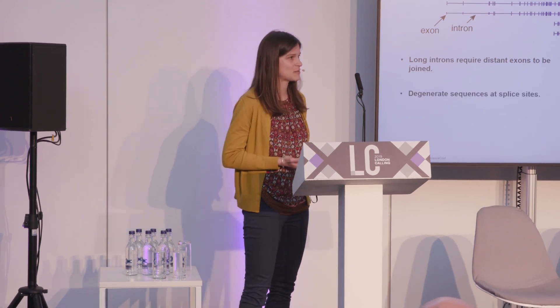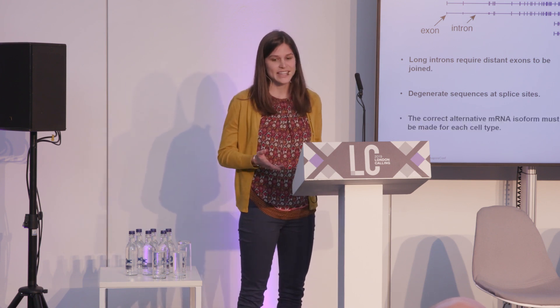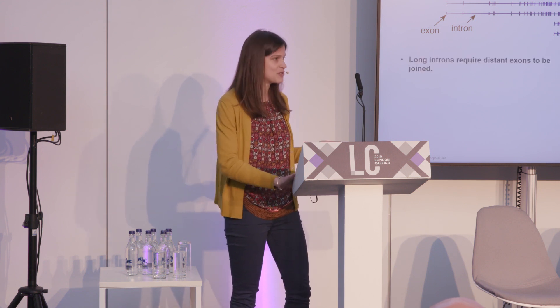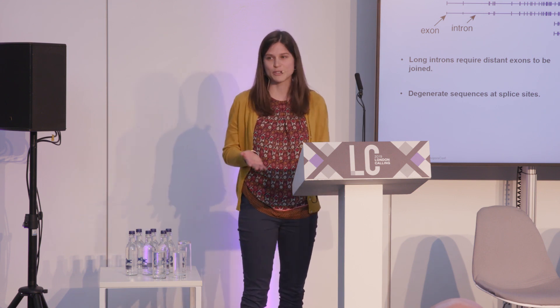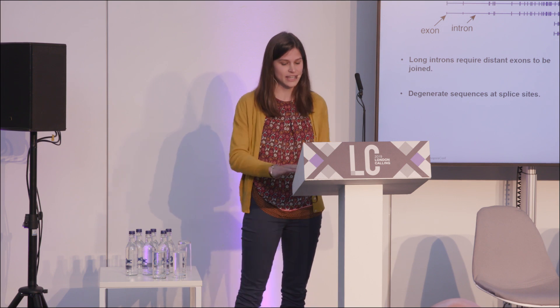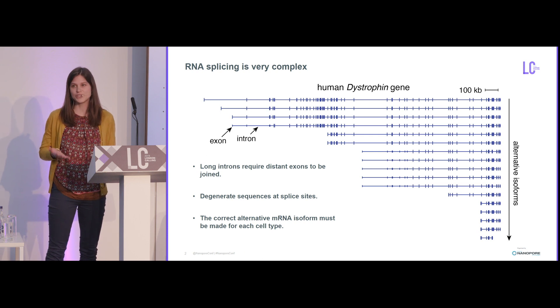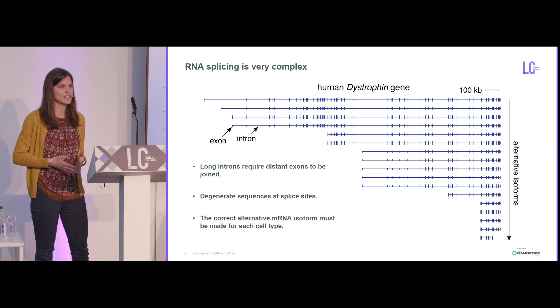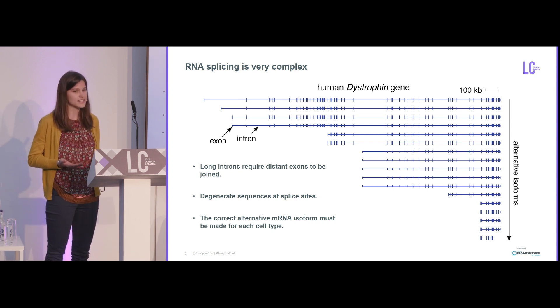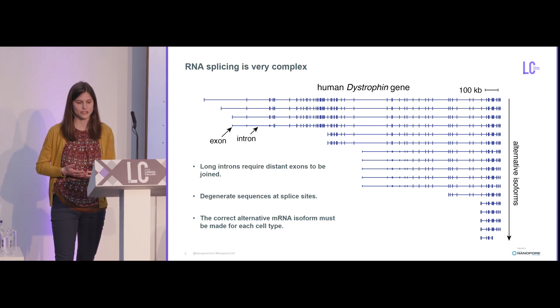We learned yesterday that RNA splicing is incredibly complex. You have lots of introns that can be in human genes, and these require exons that are far apart to come together and be joined. We also know that there's degenerate sequence information at these introns, so it's hard for the splicing machinery to know where one intron starts and one ends. We have multiple different isoforms that can result from the same gene, and the machinery has to know exactly which transcript to make every time. This is really important because if this whole process goes wrong, it can lead to severe diseases — for example, if splicing is disrupted in this gene, it can lead to muscular dystrophy.